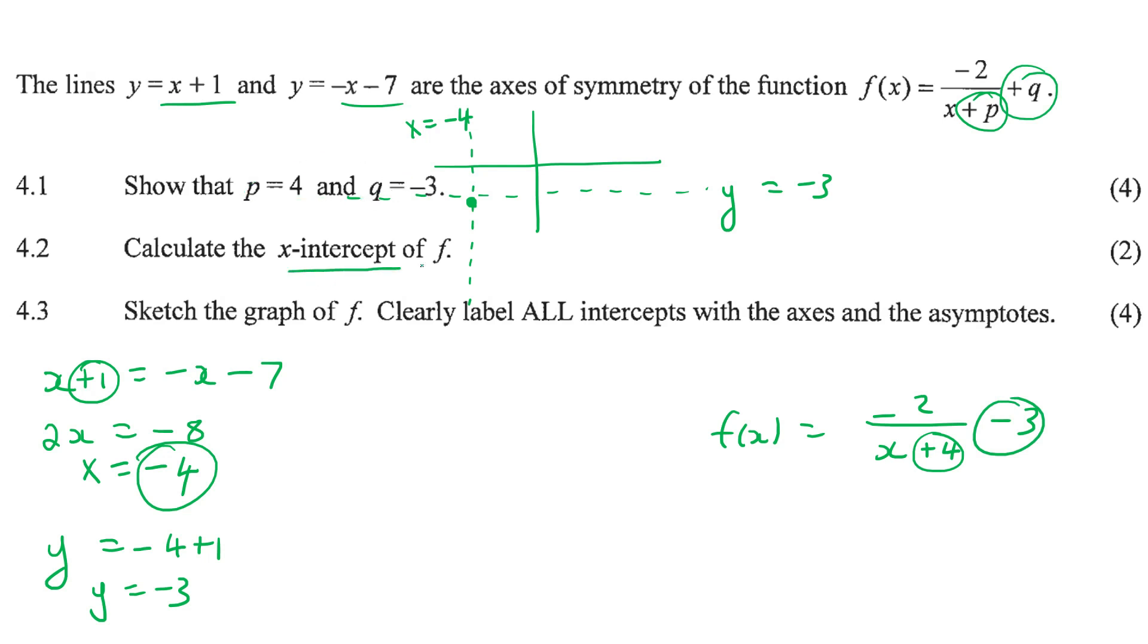Now it says calculate the x-intercept. To find an x-intercept, you make y zero. And so you end up with this. Now all you do here is you take this minus 3 to the other side. So you'd end up with 3 equals to minus 2 over x plus 4.